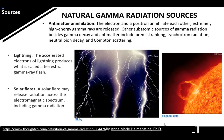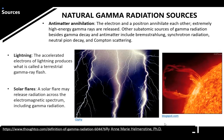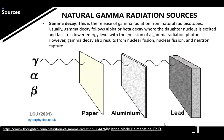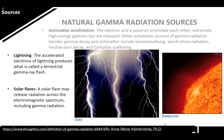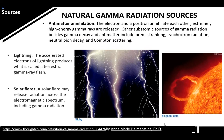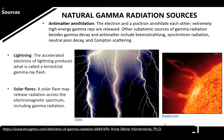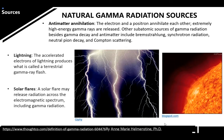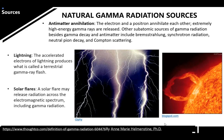Some natural gamma radiation sources include: gamma decay, antimatter annihilation, and lightning — where accelerated electrons of lightning produce what is called the terrestrial gamma ray flash. Solar flares are also a natural source.